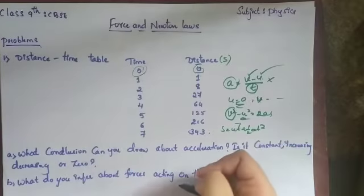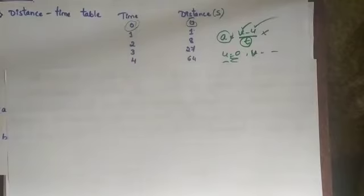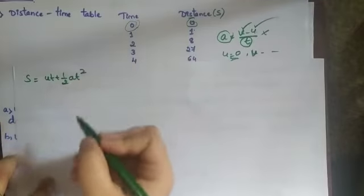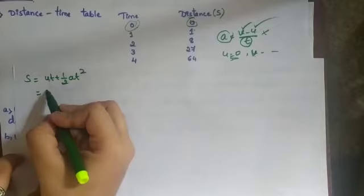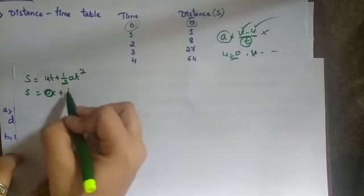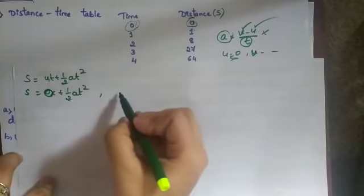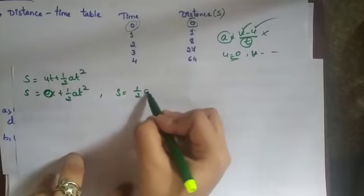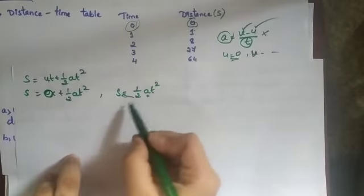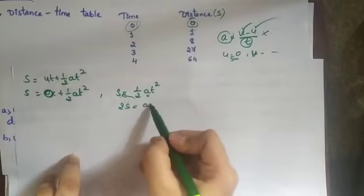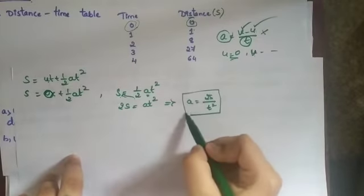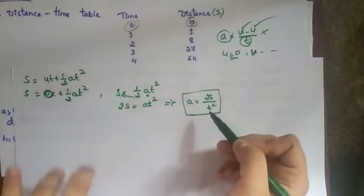Using s = ut + ½at², and since u = 0, the term ut becomes zero. The formula simplifies to s = ½at². Rearranging to find acceleration: multiplying both sides by 2 gives 2s = at², so a = 2s / t². This is the formula we will use.